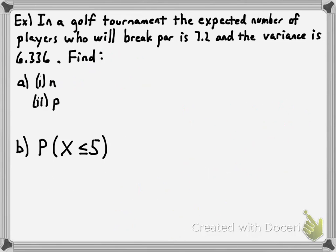Now let's do one more example, which works in reverse. In a golf tournament, the expected number of players who will break par is 7.2 and the variance is 6.336. We're going to find the value of n, the value of p, and the probability that X is less than or equal to 5. Here I've given you the mean and the variance, and we'll work backwards to find the number of players in the tournament and the probability that a player breaks par.